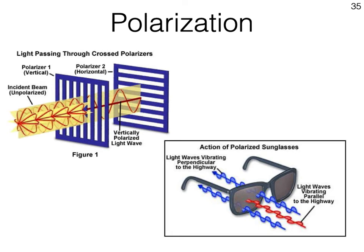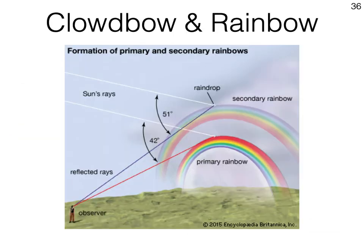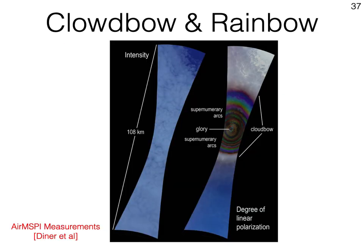So how does the linearly polarized signal help in retrieving the droplet sizes? Well, just like a rainbow, a cloud bow is formed by light scattered from spherical water droplets. And the angle at which the bow is visible depends on the droplet sizes. Here are two images of the same cloud acquired by AirMISP. As you can see in the right intensity image, the cloud bow is not visible. And this is due to the strong backdrop of multiple scattering. In contrast, the left image shows the degree of linear polarization, where the cloud bow and other informative phenomena are clearly seen, revealing information about the droplet size.